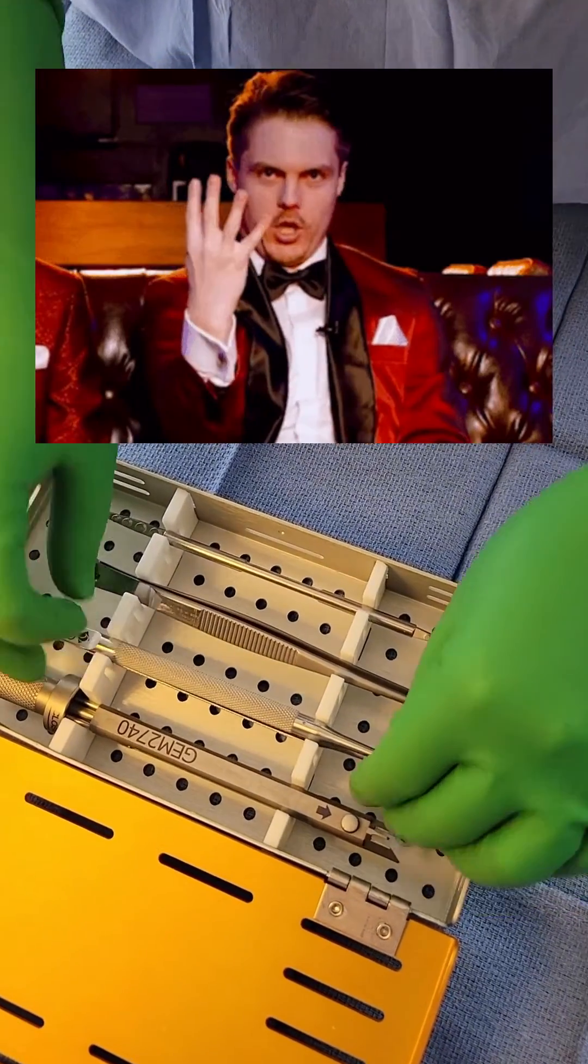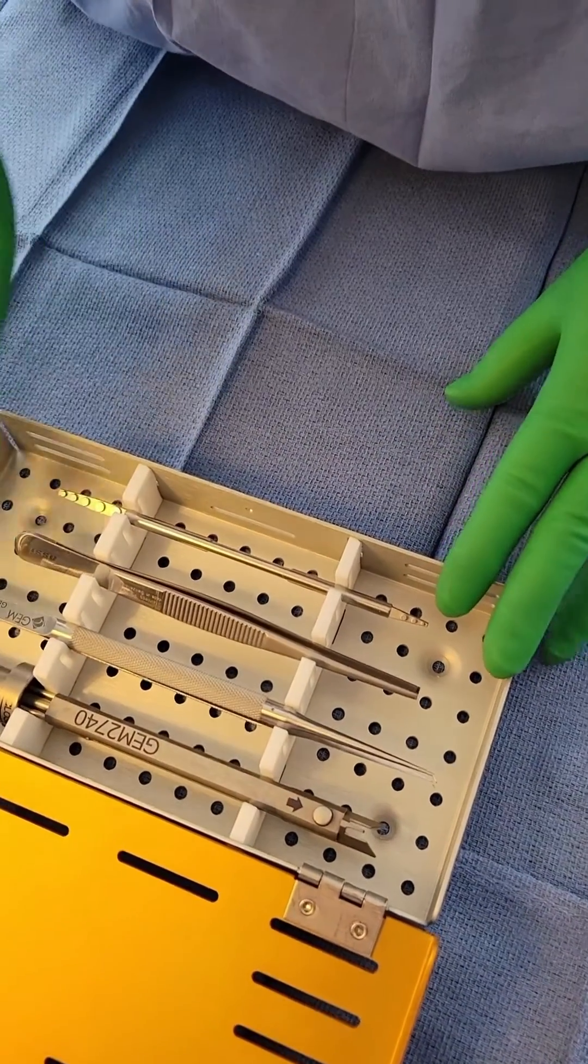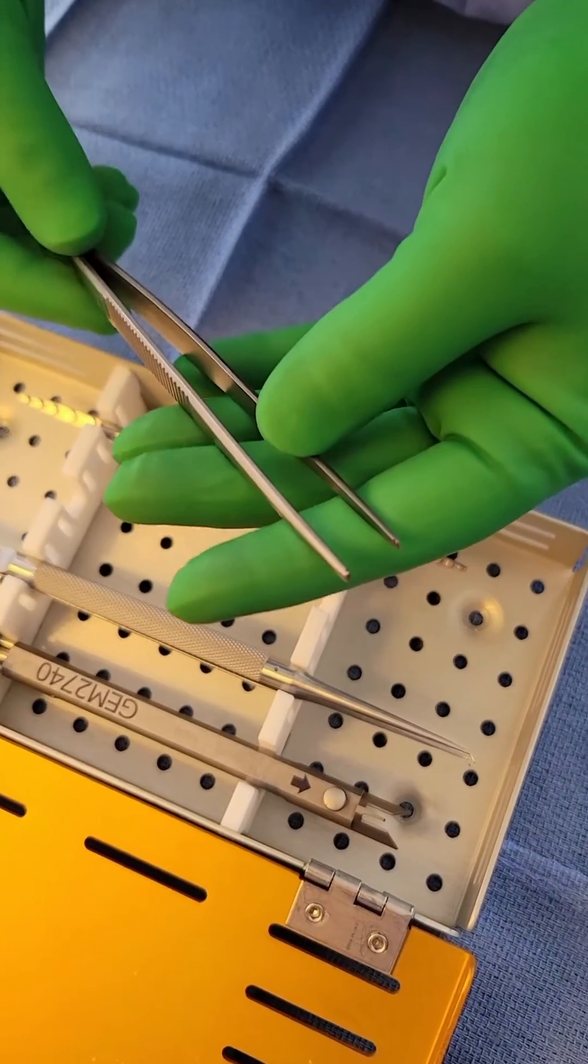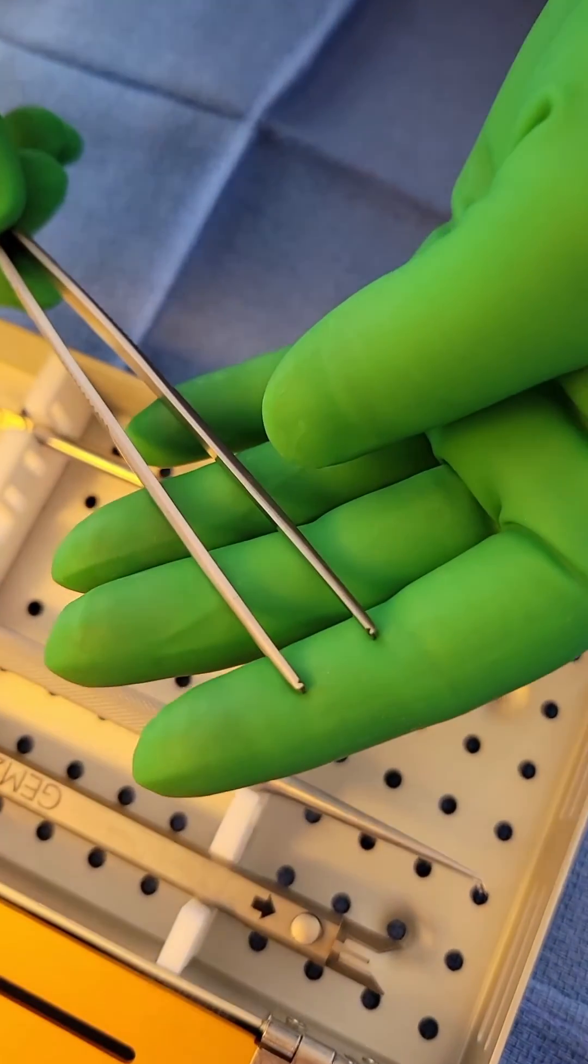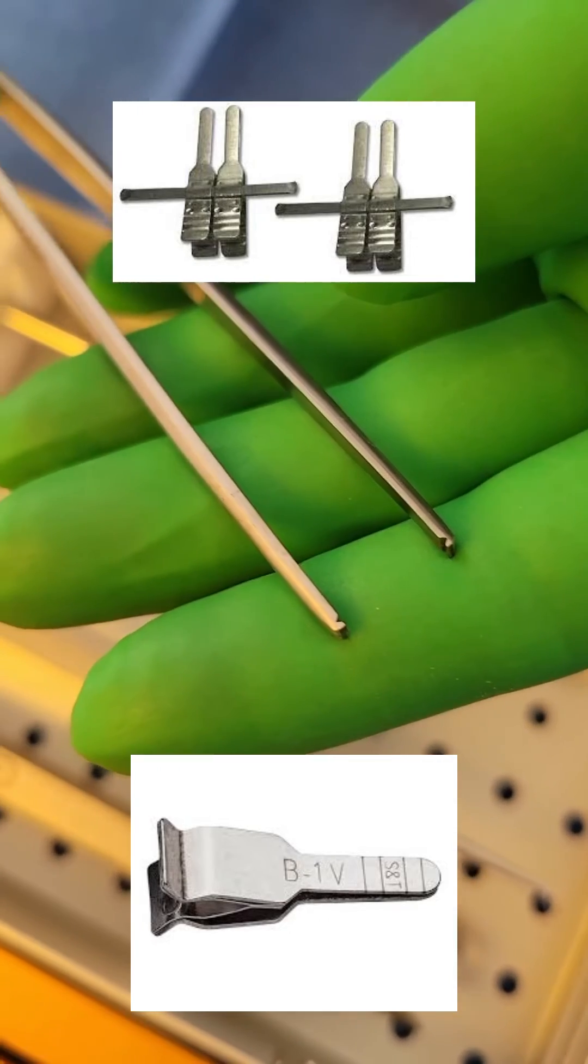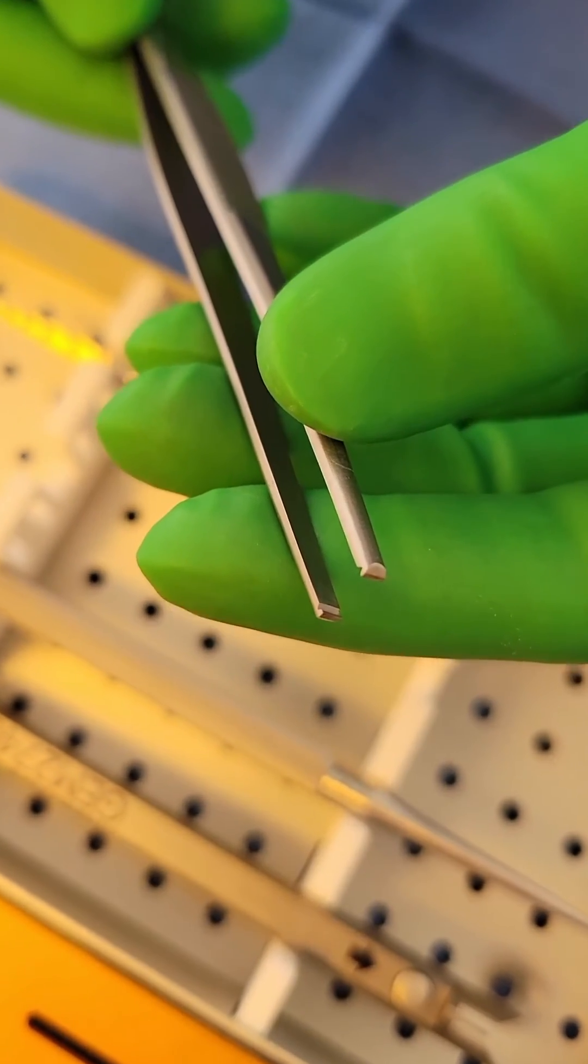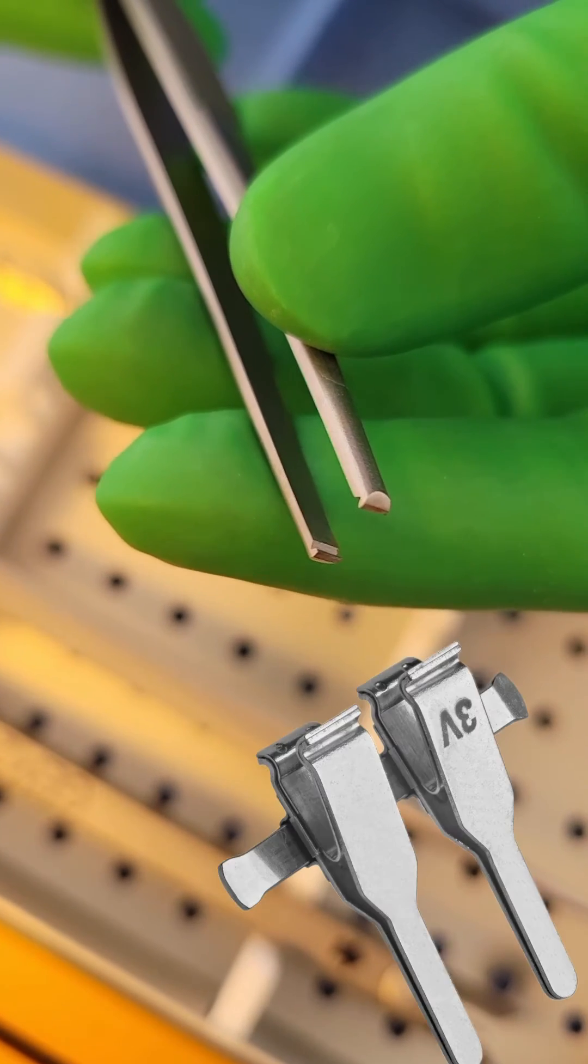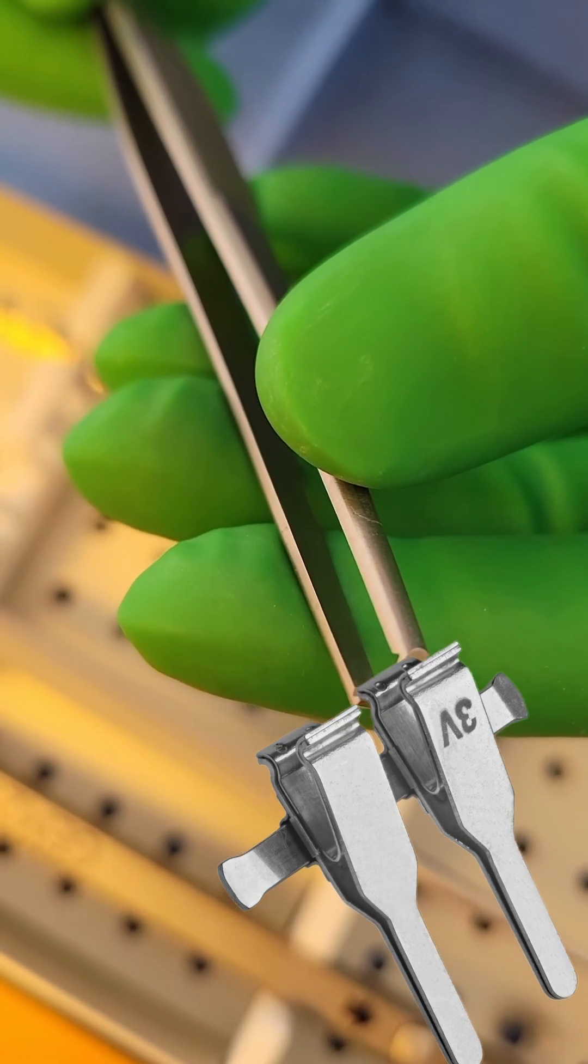Lastly, is the micro clip applying forceps or the Rizzuti. This is used to hold on to what we call bulldogs. If you watch my video on free flaps, we'll explain what bulldogs are. Right here, the notch in the forceps fits perfectly into the end of these bulldogs so the surgeon can apply them to the vessels with ease.